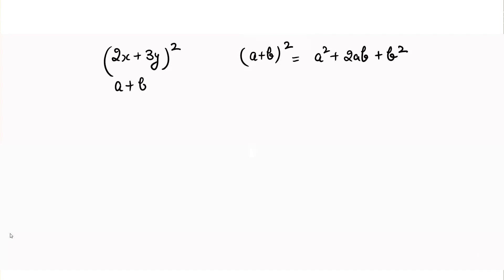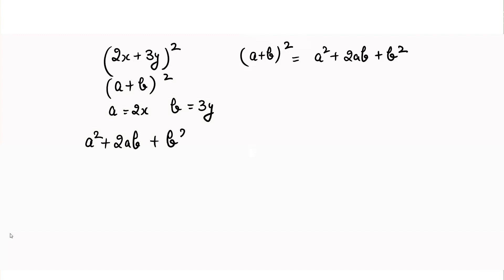Here the value of a is equal to 2x and the value of b is equal to 3y. We have to substitute the values of a and b into the formula: a squared plus 2ab plus b squared. So we write down the values of a and b in the formula.